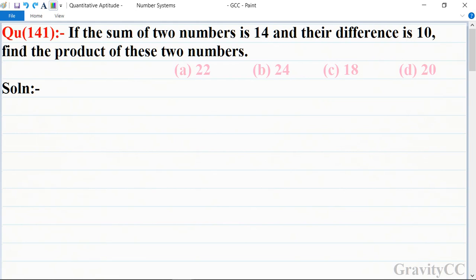Quantitative aptitude, chapter number systems, question number 141: If the sum of two numbers is 14 and their difference is 10, find the product of these two numbers. In this question, given that the sum of the two numbers is 14 and their difference is 10, what is the product of these two numbers? So first of all...